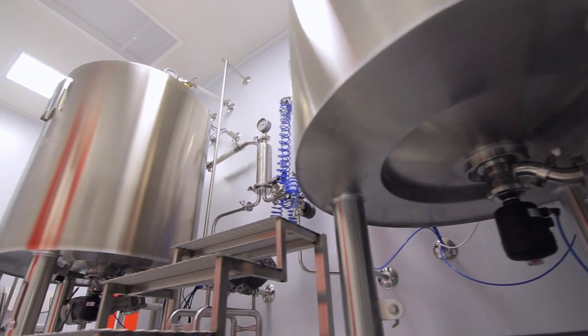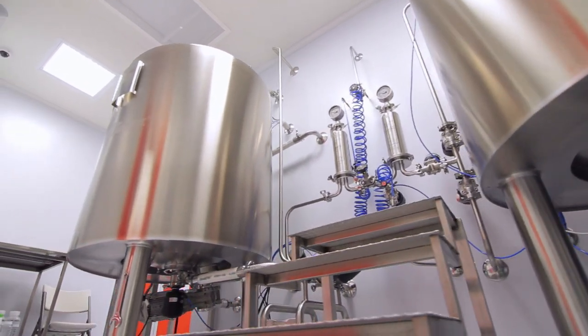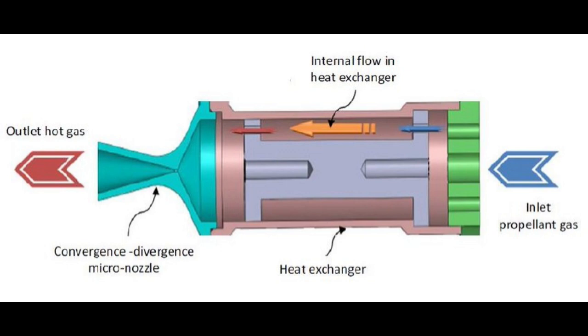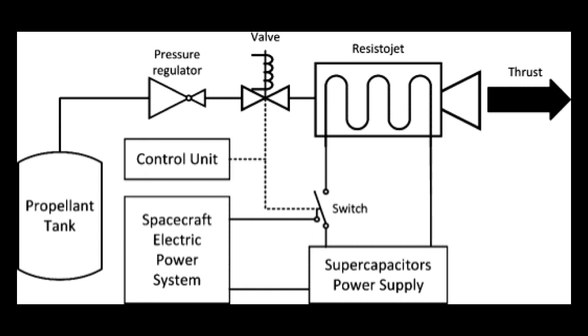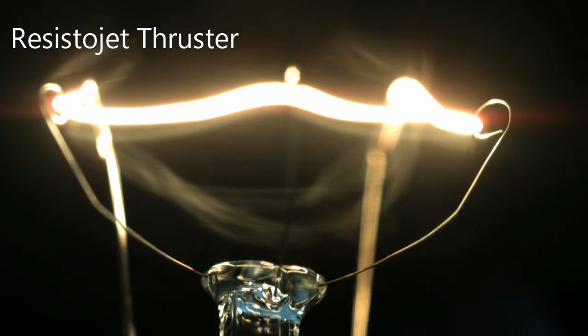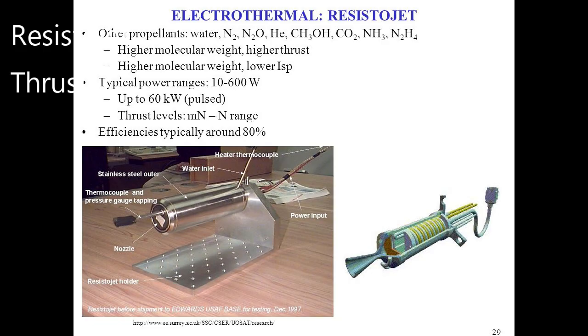The next simplest thruster is an electrothermal thruster called a resistojet thruster. This design heats the gas in a small chamber before it goes into the nozzle. This engine uses a resistor with electricity flowing through it to create heat. Think of tungsten wire in an old light bulb. The propellant is pumped around or through the resistor and absorbs the heat. This increases its kinetic energy. It expands more and has a higher ejection velocity than a simple cold gas thruster.